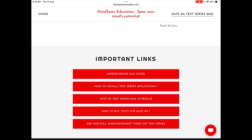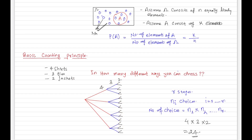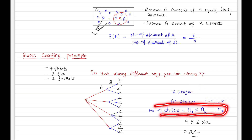Alright, let's start with our lecture. In the last video, we saw that if we have some sequential process with R stages, and at each stage we know how many choices we have — at the first stage n1 choices, at the second stage n2 choices, and so on through R stages — then the total number of choices is the product of all of them.